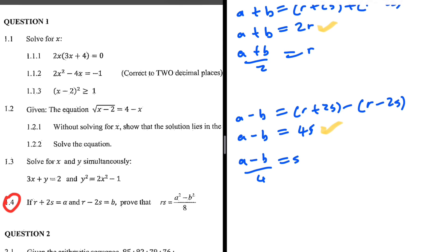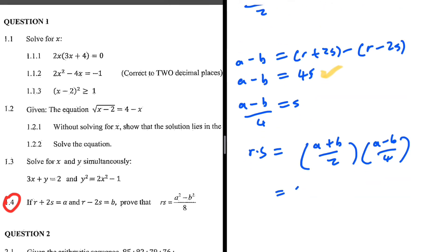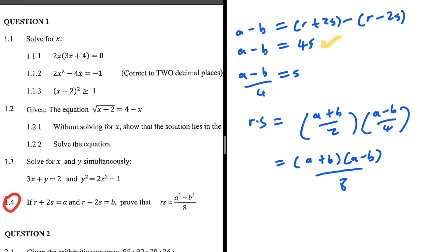So r multiplied by s will be equals to (a plus b) over 2 multiplied by (a minus b) over 4. Well, it should be easy to see that in the numerator we have (a plus b) multiplied by (a minus b), and then on the denominator we have 2 multiplied by 4, which is 8. But what we have on the numerator is the difference of two squares, so this is a squared minus b squared over 8.